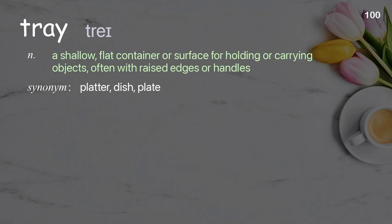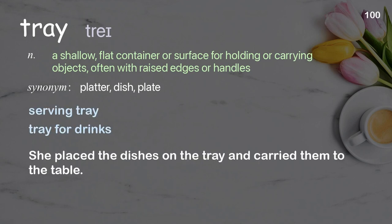Tray: A shallow, flat container or surface for holding or carrying objects, often with raised edges or handles. Examples: Serving tray. Tray for drinks. She placed the dishes on the tray and carried them to the table.